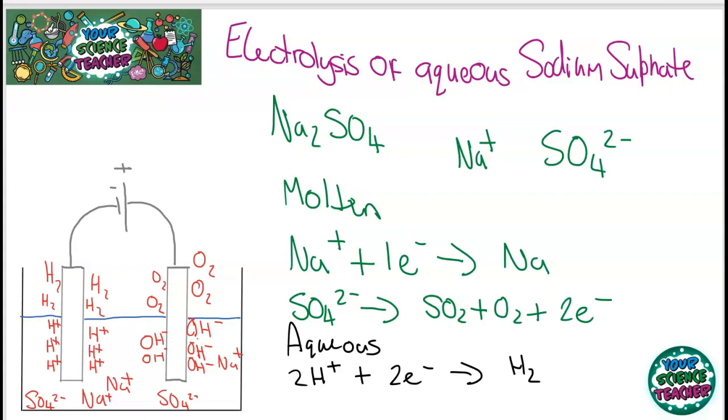And at the anode, we're going to get the OH-. And that's going to get converted into oxygen. Now, it's quite good to remember the half equation for the oxidation of the hydroxide ion. That's quite a good equation to just remember, as it sometimes could pop up in a higher exam paper.